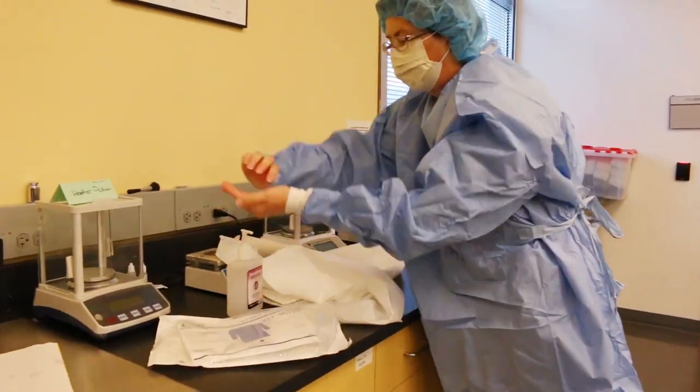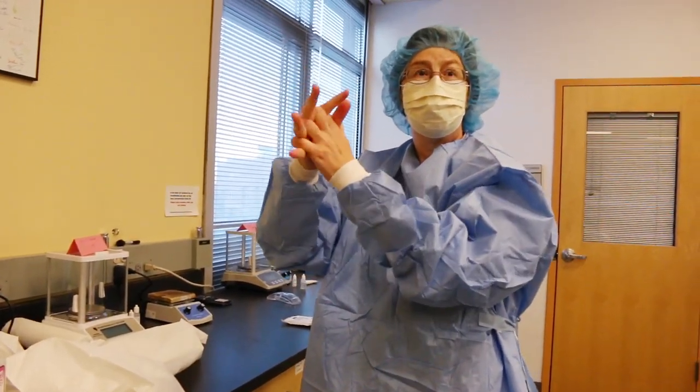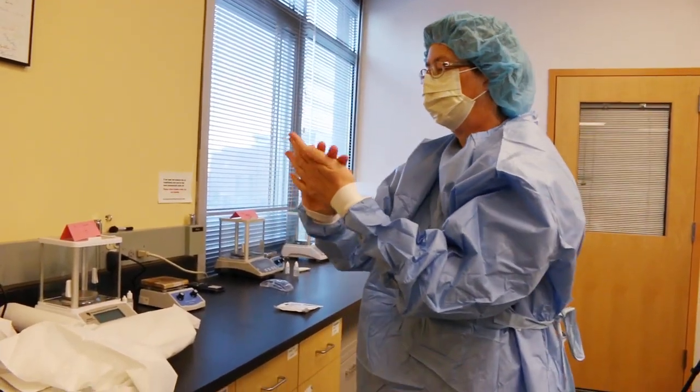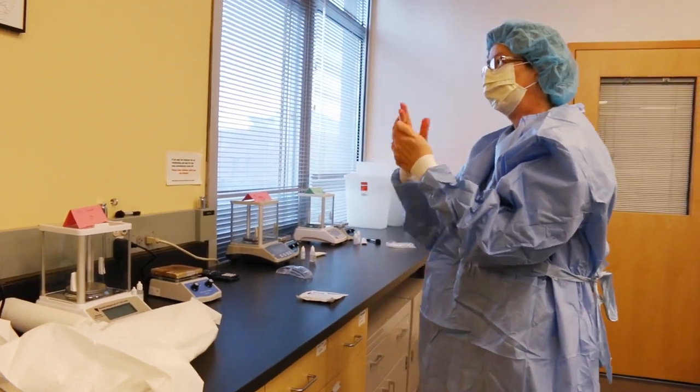The next step, which is labeled Step 24, is to sterilize your hands with sterile, foamed, 70% isopropyl alcohol.